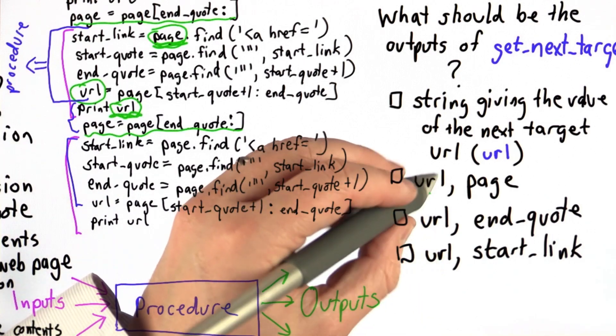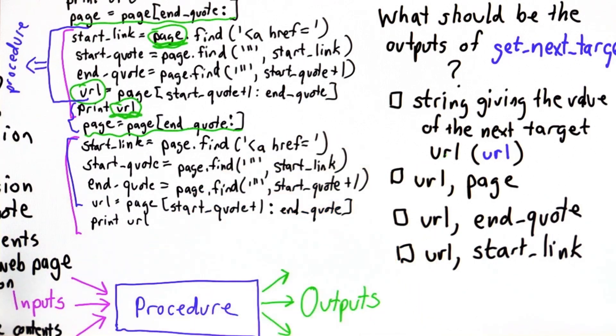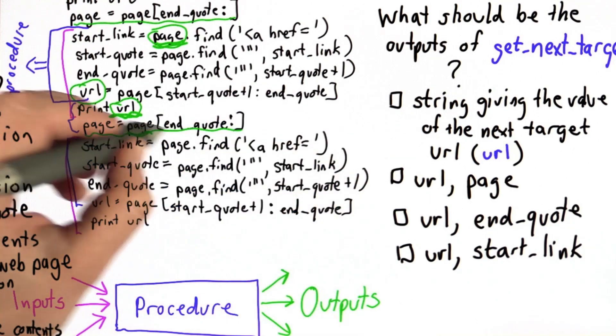So that means we definitely need at least URL as our output, and all of the choices here included URL. But that's not all we do, so we have to look at the second line as well.